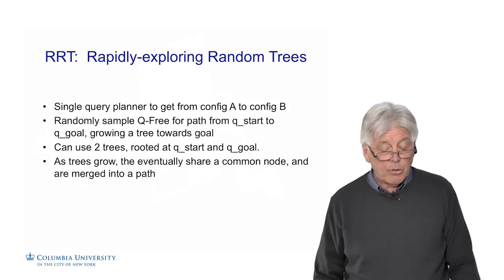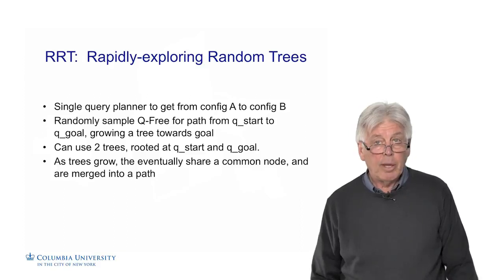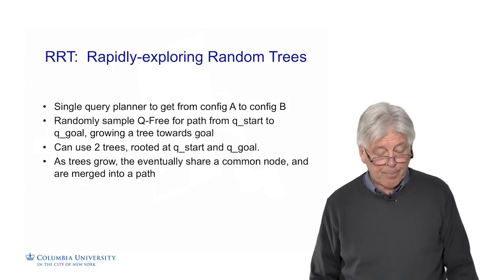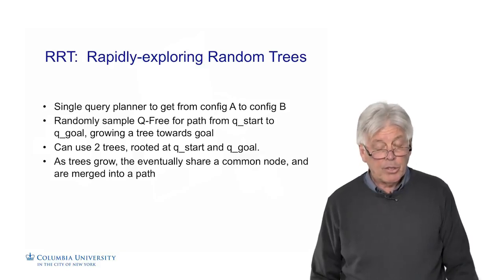What's nice is we can use two trees, one rooted at the start, one rooted at the goal, and hopefully they will merge and make the path efficient and fast. Eventually the trees grow, they share a common node, and they merge into the path.